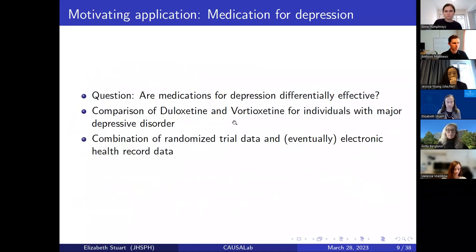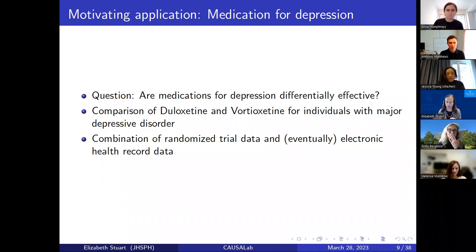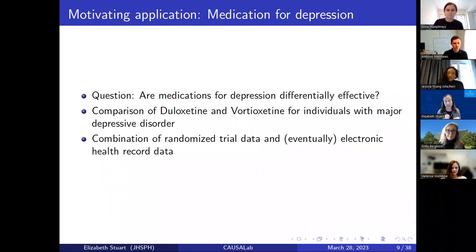I want to motivate this using an example from medication for depression treatment. We're comparing two medications — and I apologize, some of you may be psychiatrists and psychologists with a lot more expertise in this particular topic. We're looking at two newer medications for major depressive disorder, especially for people with long-term major depressive disorder for whom first-line treatments have not been effective: duloxetine and vortioxetine. Vortioxetine in particular came on the market relatively recently, and there's interest in the comparative effectiveness of whether these two medications are differentially effective for individuals.